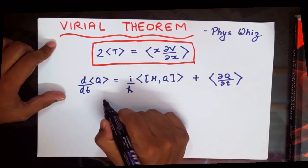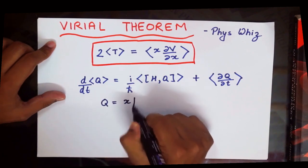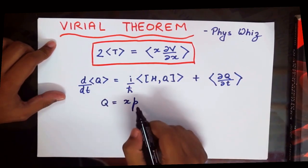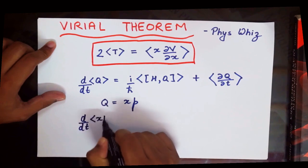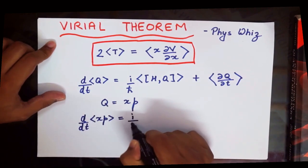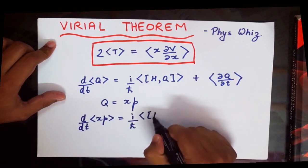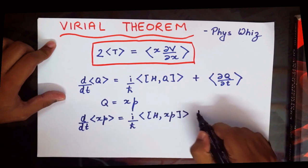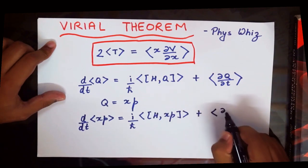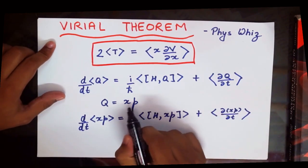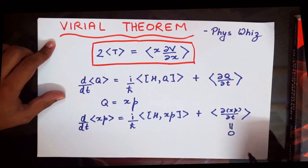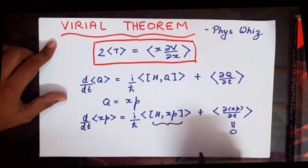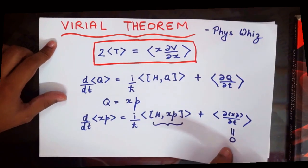To prove the Virial theorem, we take Q as xp. Our operator is xp, and we plug it into the Ehrenfest theorem, giving d/dt of ⟨xp⟩ equals i over h-bar times ⟨[H, xp]⟩ plus ⟨del(xp)/del t⟩. As you can notice, there is no explicit time dependence in this operator, so that term equals zero. The only thing left to do is to calculate the commutator [H, xp].